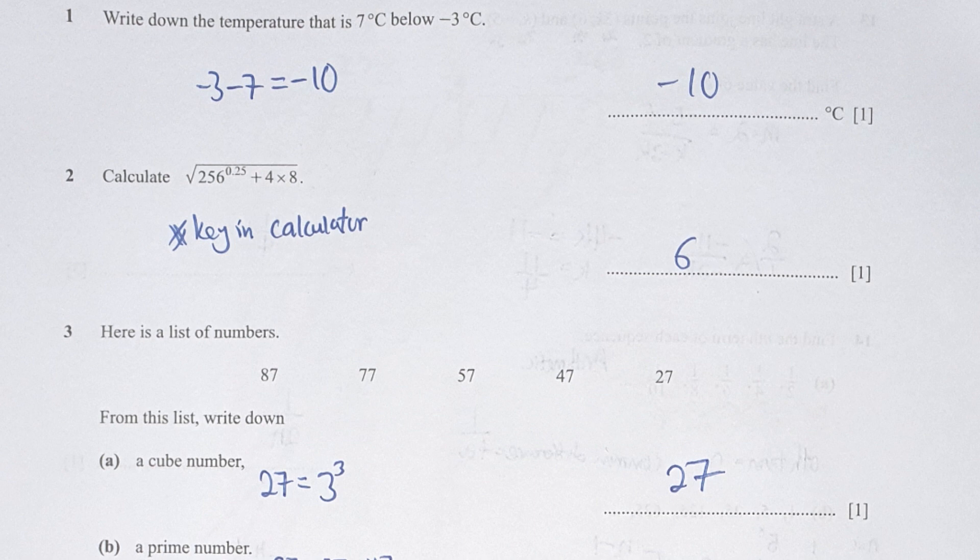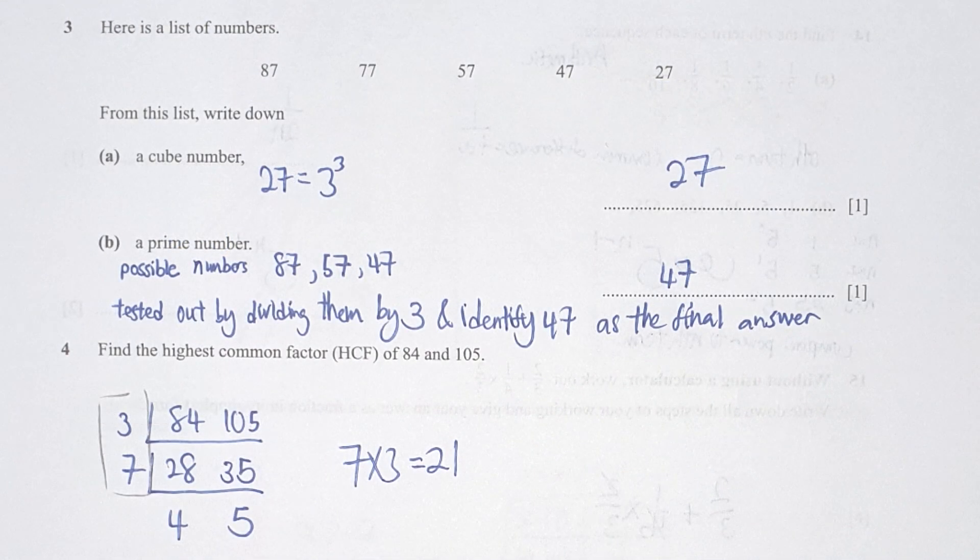Question 3: based on the list of numbers, a cube number should be 27. For the prime number part, the possible candidates should be 87, 57, and 47. However, both 87 and 57 can be divided by 3, hence your final result should be 47 only.